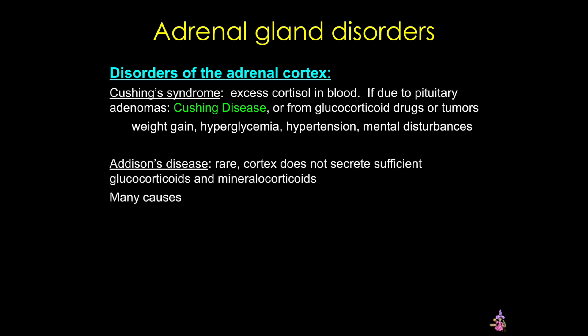In contrast, Addison's disease, or chronic adrenal insufficiency, is rare and is caused by insufficient secretion of glucocorticoids and mineral corticoids. This disease has many different causes, including damage to the cortex. Symptoms can include low blood pressure, fatigue, and weight loss. And because of the loss of mineral corticoids, this disease can be fatal if left untreated.